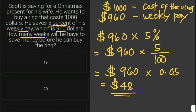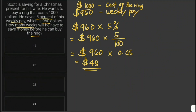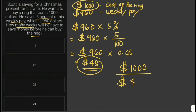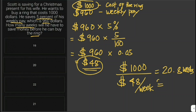The question is how many weeks will he have to save before he can buy the ring which costs one thousand dollars. We need to divide one thousand dollars by 48 dollars per week. This is equivalent to 20.8 weeks. Since there is no 20.8, we round up to approximately 21 weeks. So he needs to save 48 dollars for 21 weeks to save a total of one thousand dollars.